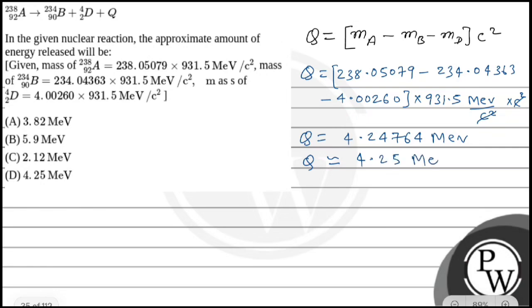It is positive, that is Q greater than zero, so energy is released. So the energy released is 4.25 mega electron volt. So the final answer is 4.25 mega electron volt, that is option D. Hope you understood it well. All the best.